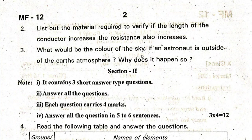What would be the colour of the sky if an astronaut is outside of the Earth's atmosphere? Why does it happen so?